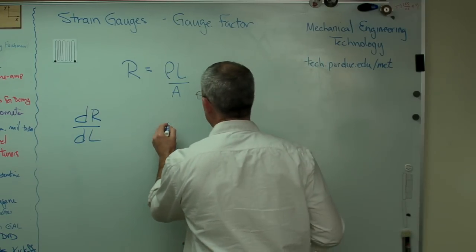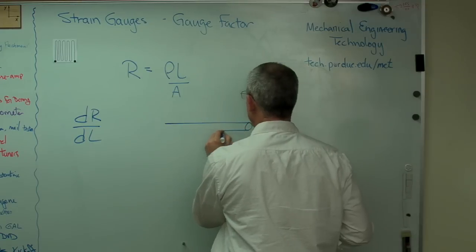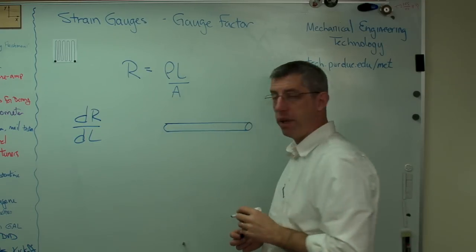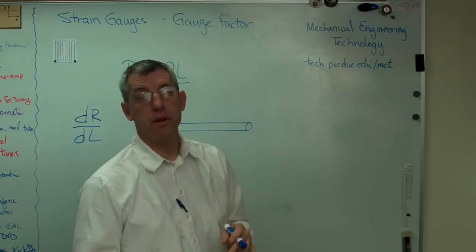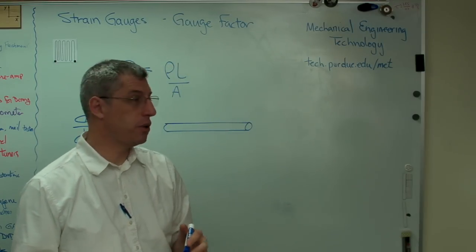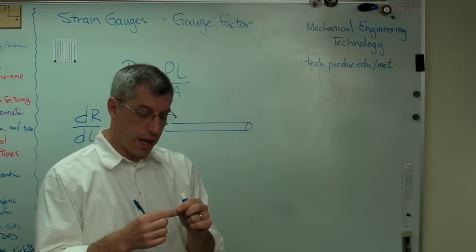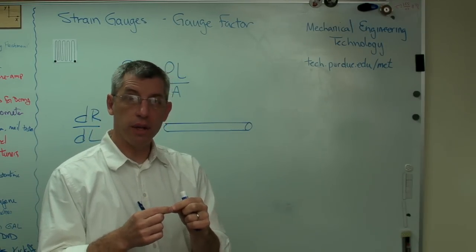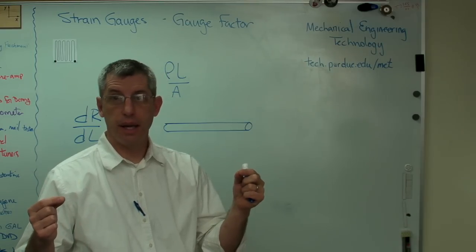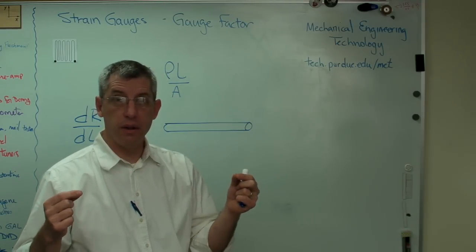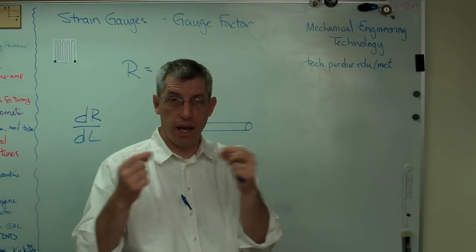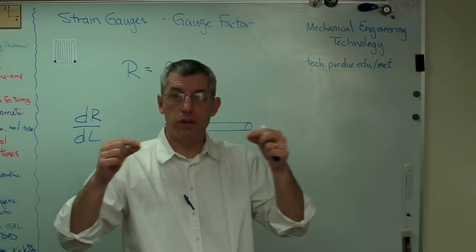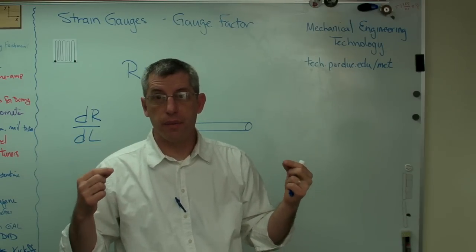So what I'm going to do here is let's imagine there's something called a liquid strain gauge. Now these were real. These are some of the first strain gauges that were used and they were used by doctors. Take a piece of latex rubber tubing and fill it with mercury and seal the ends and put a little lead into each end so you can measure resistance across the ends of this column, this tube of liquid metal.